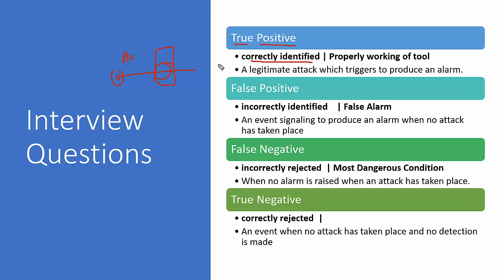Second is false positive, which means incorrectly identified — also called a false alarm. For example, you investigate a brute force alert and find out it was just a user who mistyped their password multiple times, but you considered it an attack when it was not. As a SOC analyst, we always struggle with false positives because they waste a lot of time and resources, as monitoring staff spend time investigating non-malicious events.